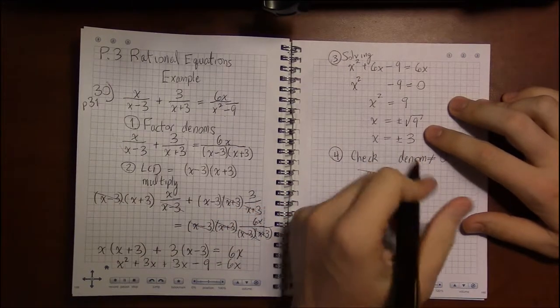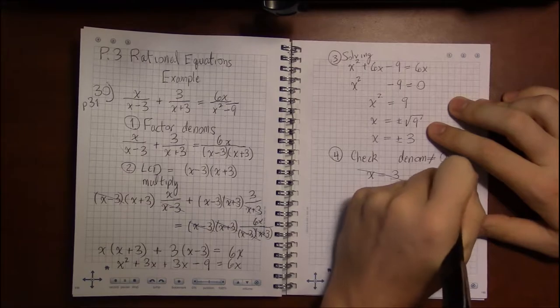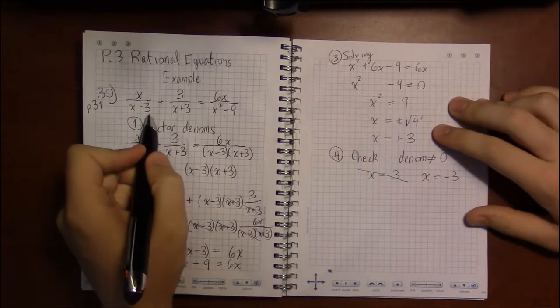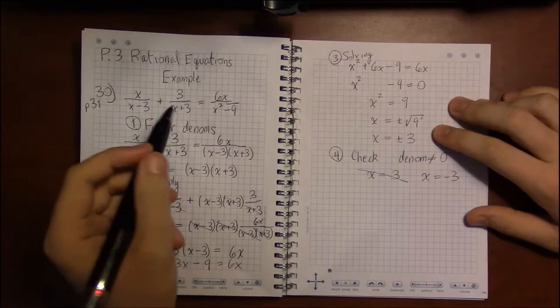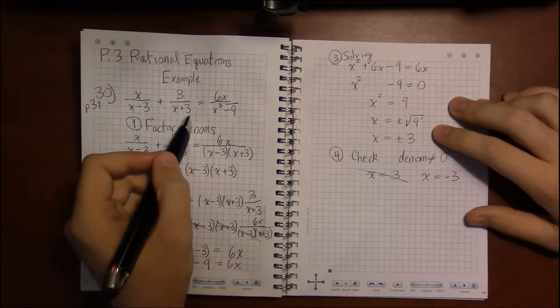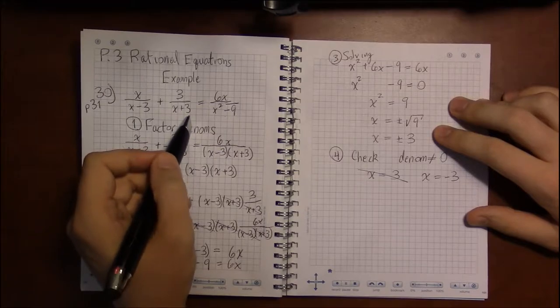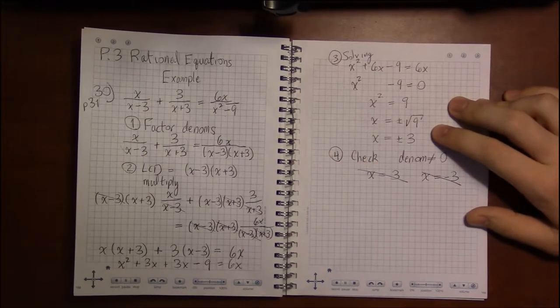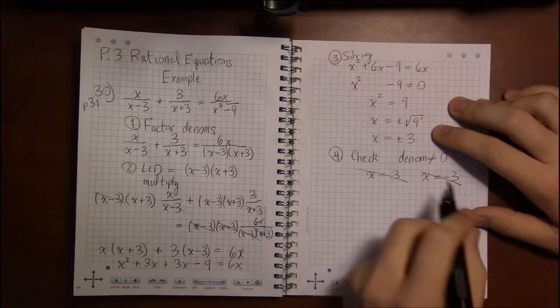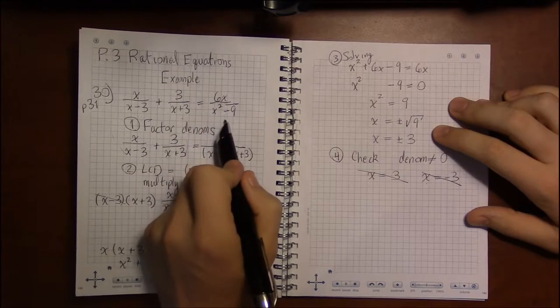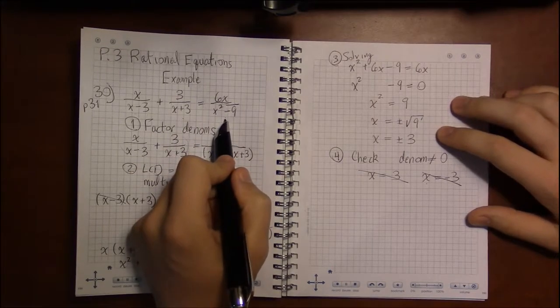What about x equals minus 3? Well, if x equals minus 3, minus 3 minus 3 is minus 6, that's okay. Minus 3 plus 3 is 0. So that's got to go as well. So x equals minus 3 is going to make the second denominator 0. It also makes the third and last denominator 0 as well.